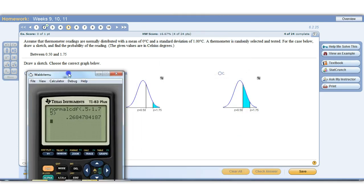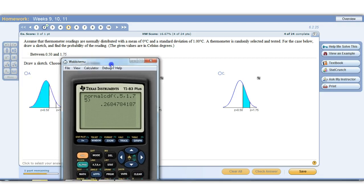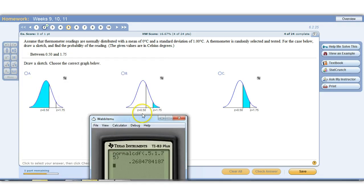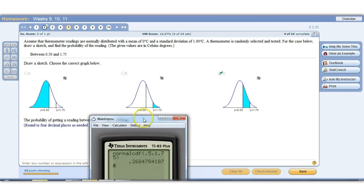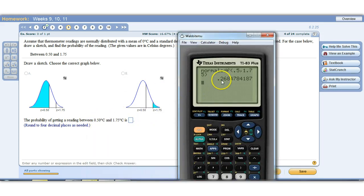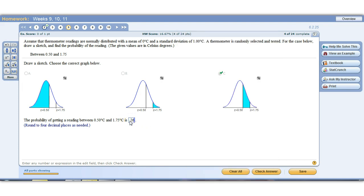Now, this one is asking us to draw a sketch. So between those two numbers, there's the lower number, there's the upper number. But none of them have between those two except for this one, part C. So check our answer. It's good. And then it wants the probability. And that's what we just found here. So the probability is 0.2685. Again, they want it to four decimal places. So 0.2685.